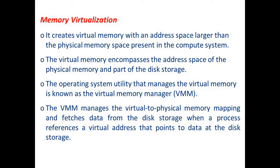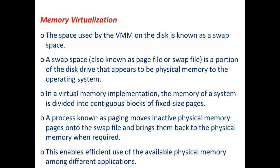The operating system utility that manages virtual memory is known as the Virtual Memory Manager (VMM). The VMM manages the virtual-to-physical memory mapping and fetches data from disk storage when a process references a virtual address pointing to data on disk. The space used by the VMM on disk is known as swap space, also called a page file or swap file — a portion of the disk that appears as physical memory to the OS.